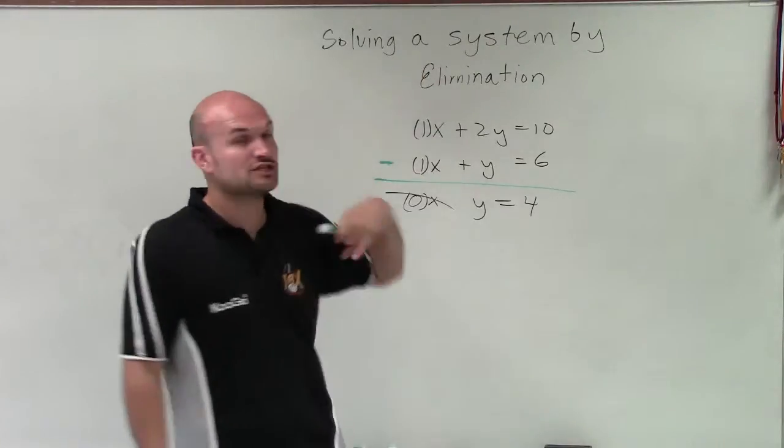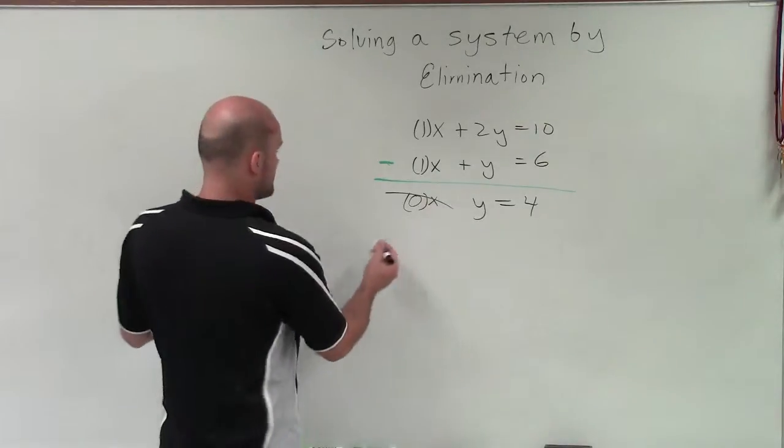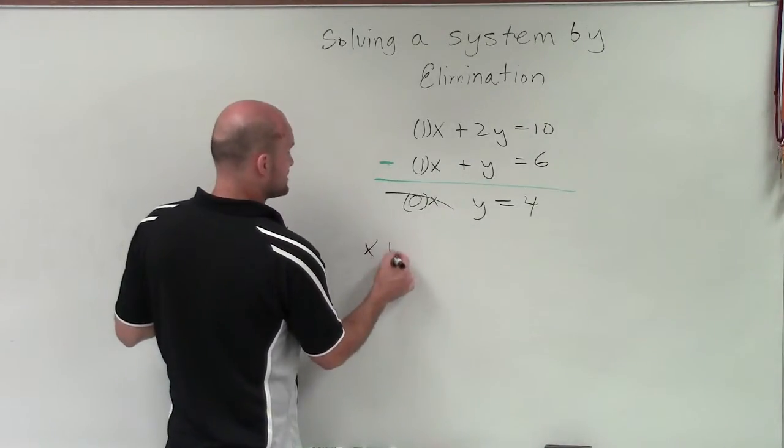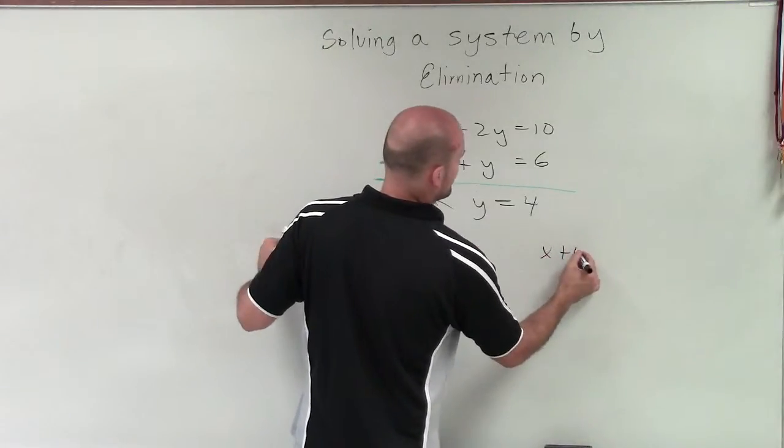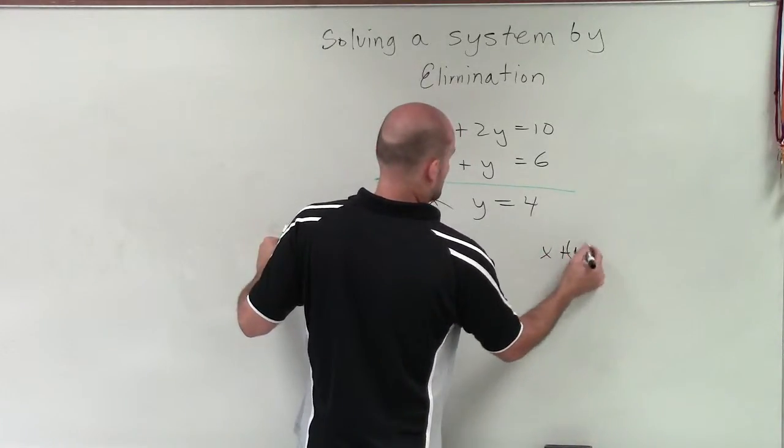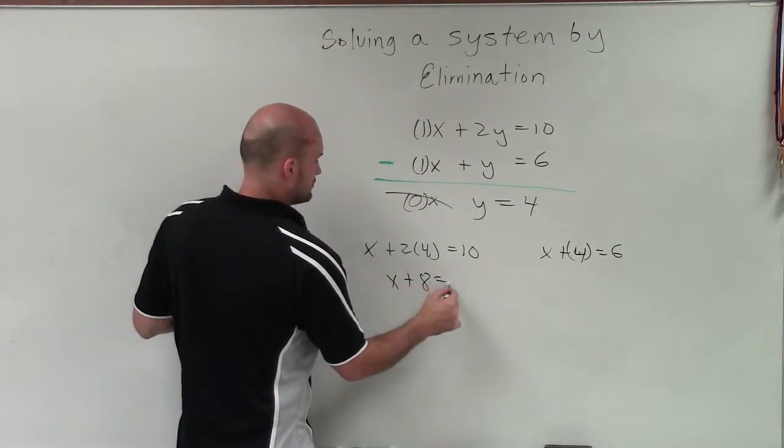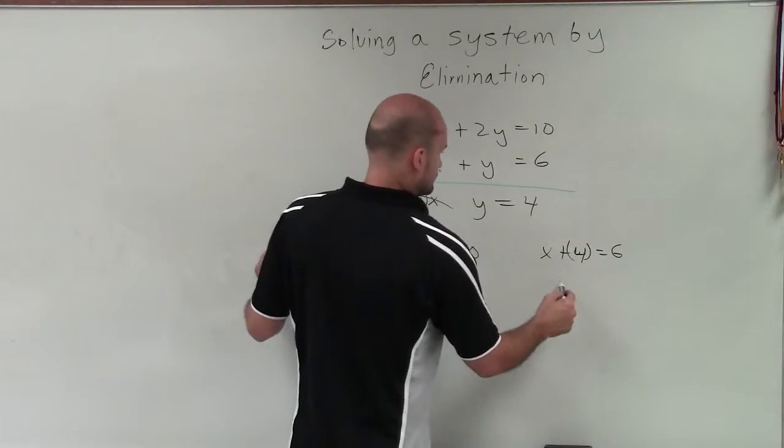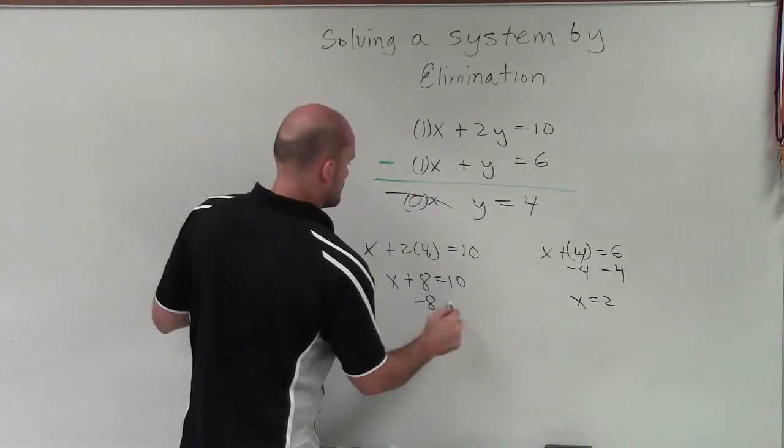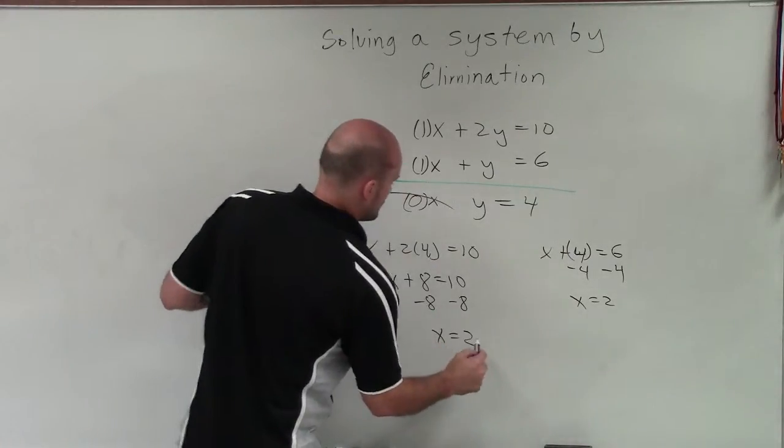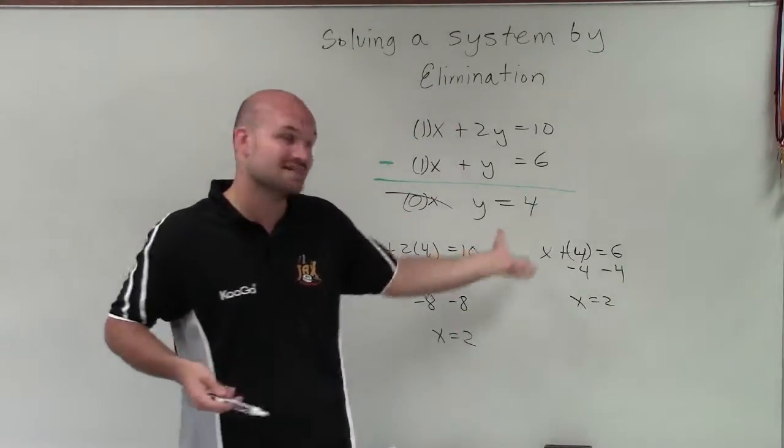So now to find the value of x, I need to choose one of my equations, the top or the bottom, to find the value of x. And it doesn't matter which one you choose. If I say x plus 2 times 4 equals 10, or if I say x plus 4 equals 6. It doesn't matter which one you use. So you can see that x is going to equal 2. It doesn't matter if you choose the top equation or the bottom equation. x equals 2.